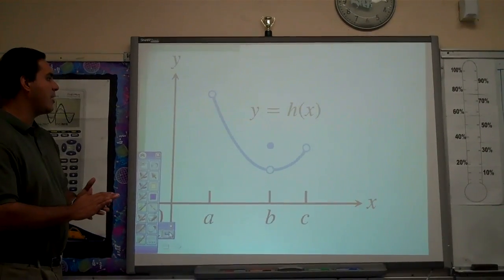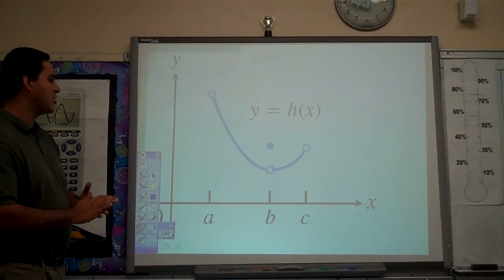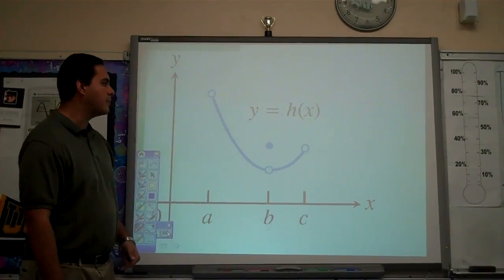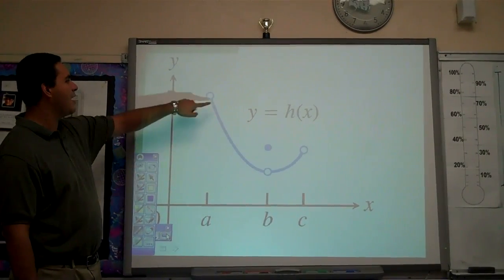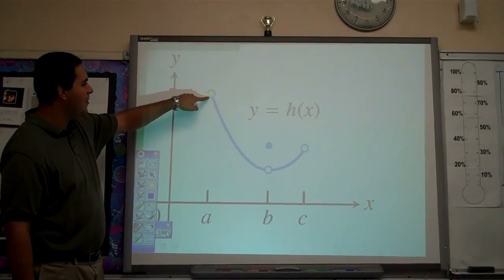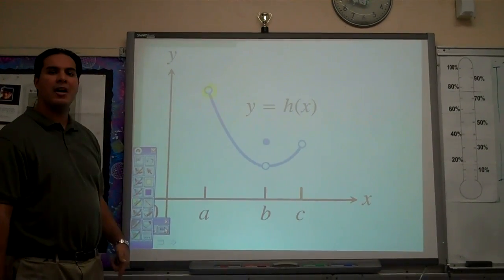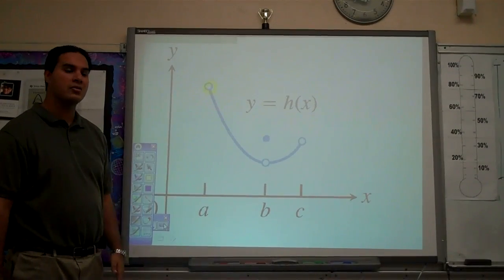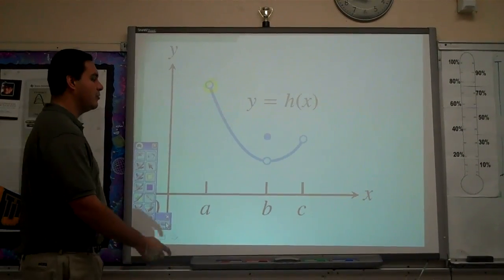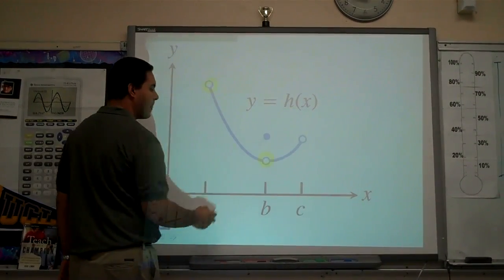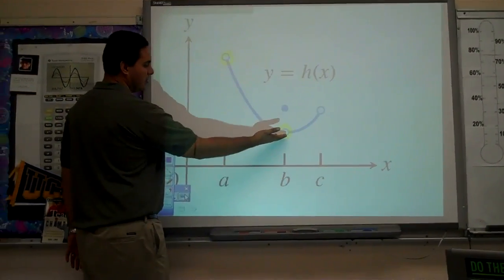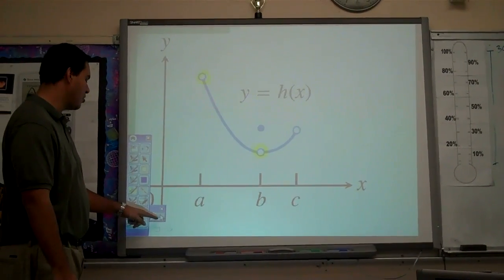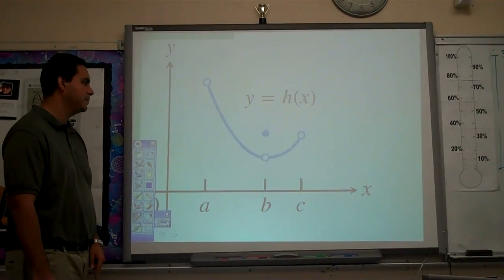Next example: function H of X on the interval from A to C. The absolute maximum should have been here, but there is no output value there, so we say that there is no max. The absolute minimum should have been here, but there is no output value there, so we say there is no absolute minimum.